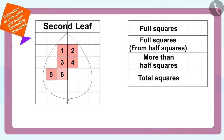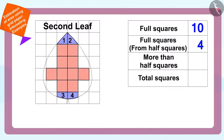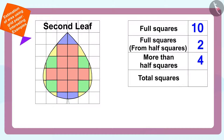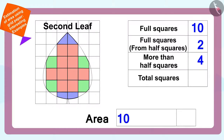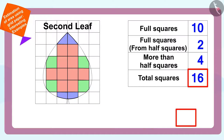The area of the second leaf has ten full squares, four half squares (equal to two full squares), and four more-than-half squares. The less-than-half squares are not counted. In this way, there are ten plus two plus four, or sixteen squares in the enclosed area of the second leaf.